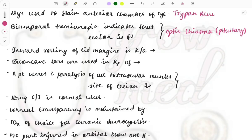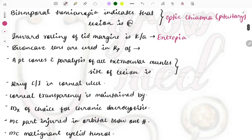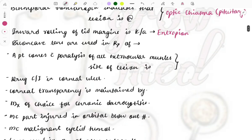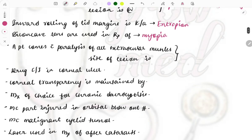The next question: inward rolling of the eyelid margin is known as entropion. Image-based questions have also been frequently asked on entropion and ectropion, so have a look at those as well. The important images of ophthalmology are linked in the description box. Concave lenses are used in the treatment of myopia. Knowing which type of lens — concave or convex — is used for myopia versus hypermetropia is also important.